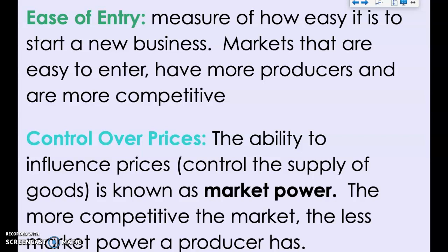The more competitive a market is, the less market power that producer has. In the fast food example, with many burger competitors, they all need to have relatively similar prices and don't have as much market power as if they were the only producer. If McDonald's was the only place that made fast food burgers, they'd have complete control and could set the price at whatever they wanted. The more competitors you have, the less control over prices you have.